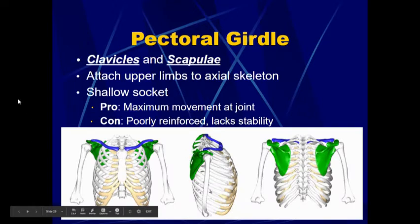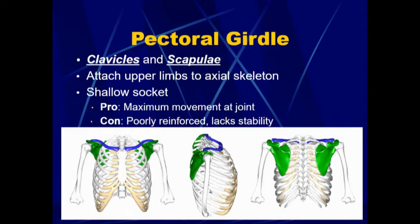Starting at the pectoral girdle, we have the clavicles and the scapulae. These attach the upper limbs to the axial skeleton, and the clavicles and scapulae form a shallow socket for the arm.